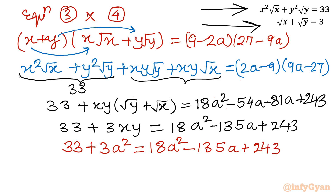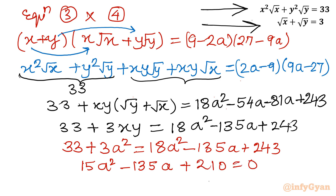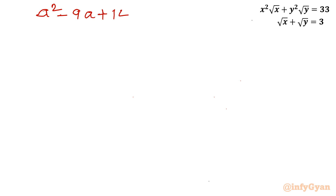Rearranging all terms to one side: 15a² − 135a + 210 = 0. Dividing by 15, this simplifies to a² − 9a + 14 = 0. Remember, a was our substitution for √(xy). Factorizing: the factors of 14 are 7 × 2, so we split the middle term as −7a − 2a, giving (a − 7)(a − 2) = 0.